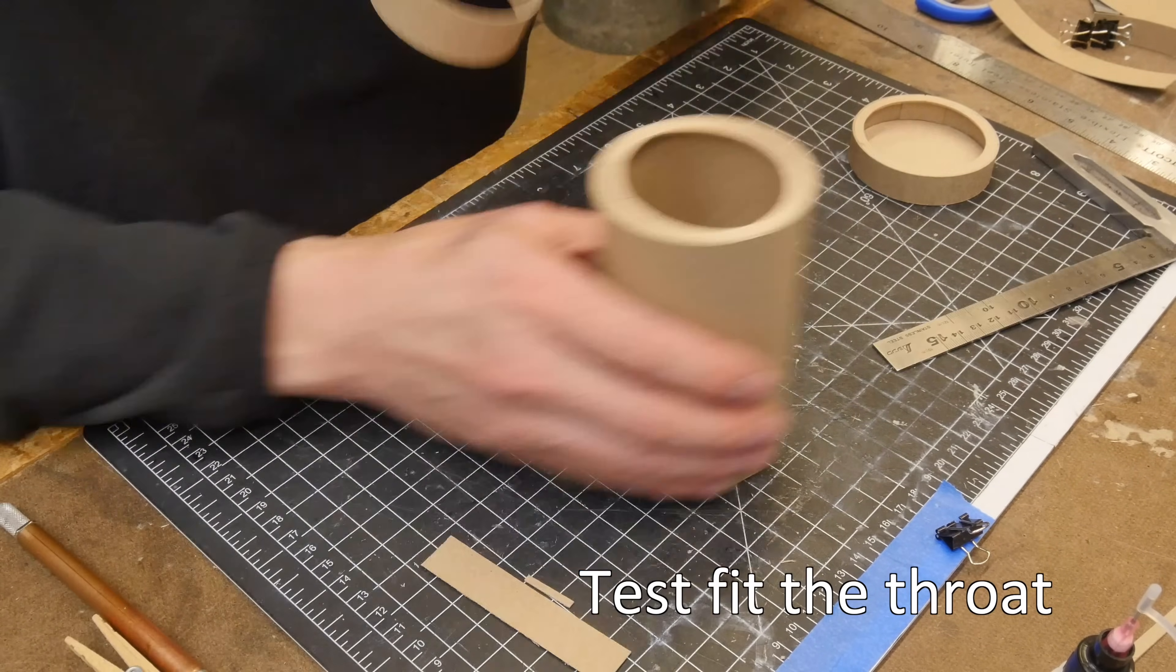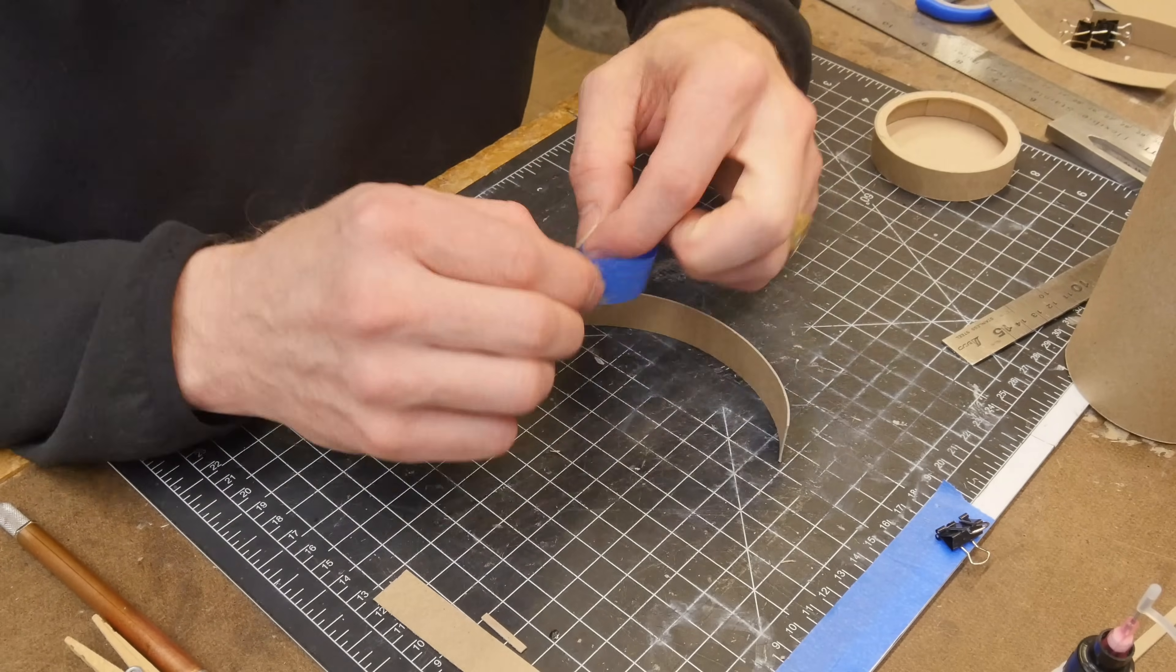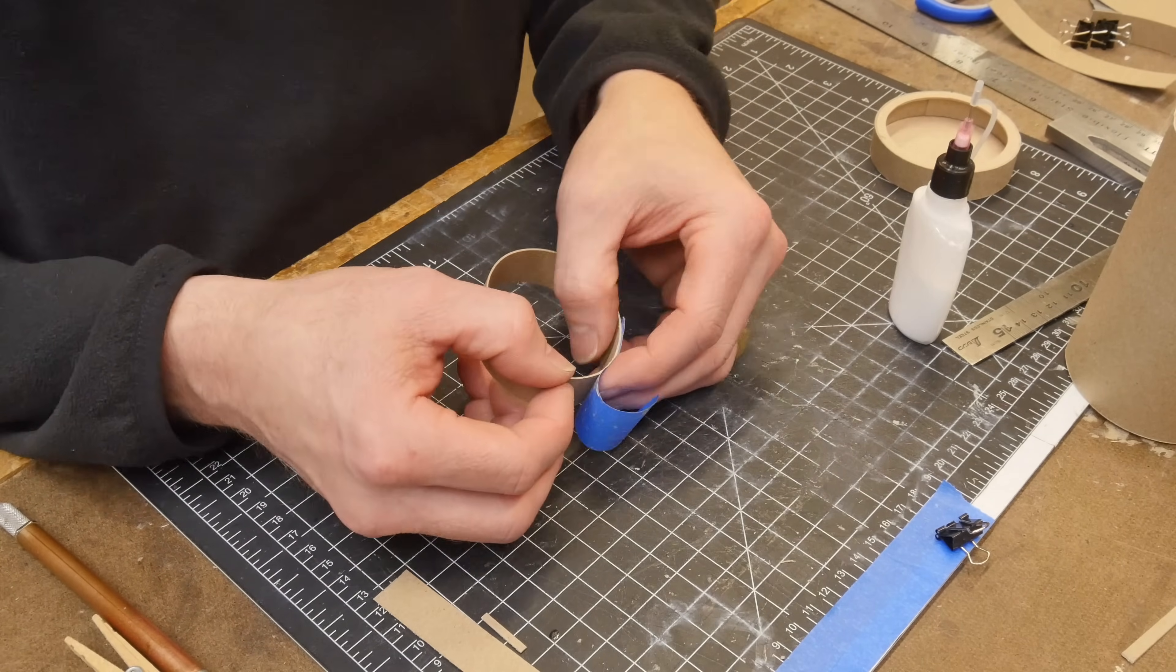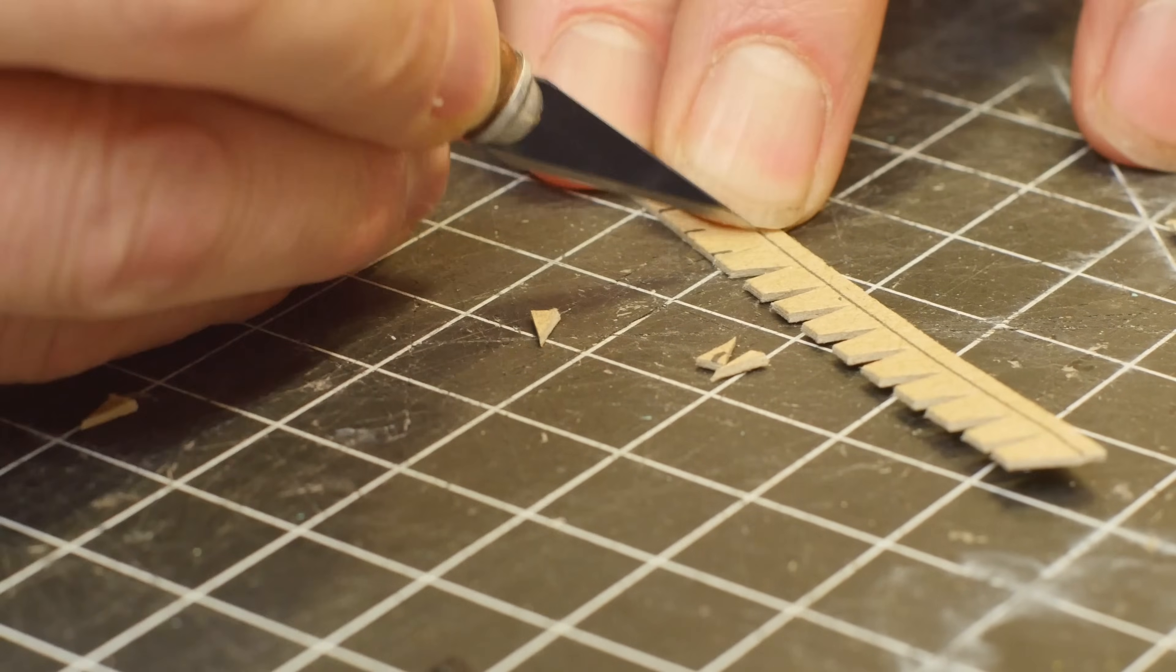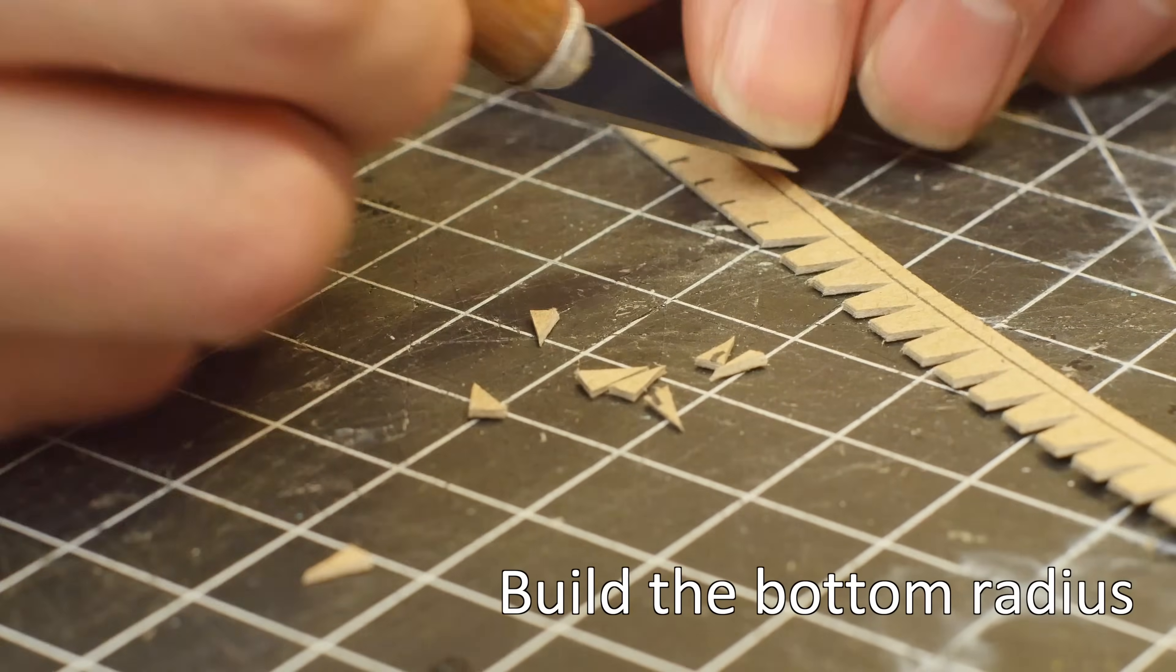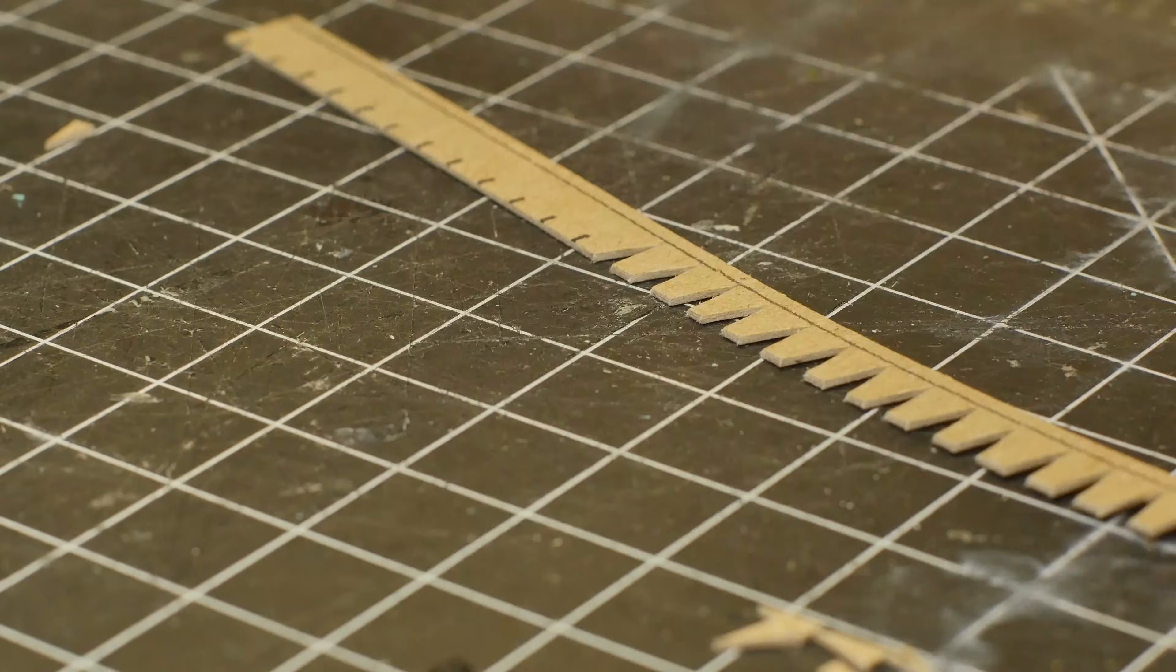Let's let that lid dry and we'll add in the throat or the neck. I just cut a strip, put a little bit of blue painters tape on it, and we're going to create a straight butt joint. There's no overlap here. So while that throat section dries, let's turn our attention to the bottom of the bottle.